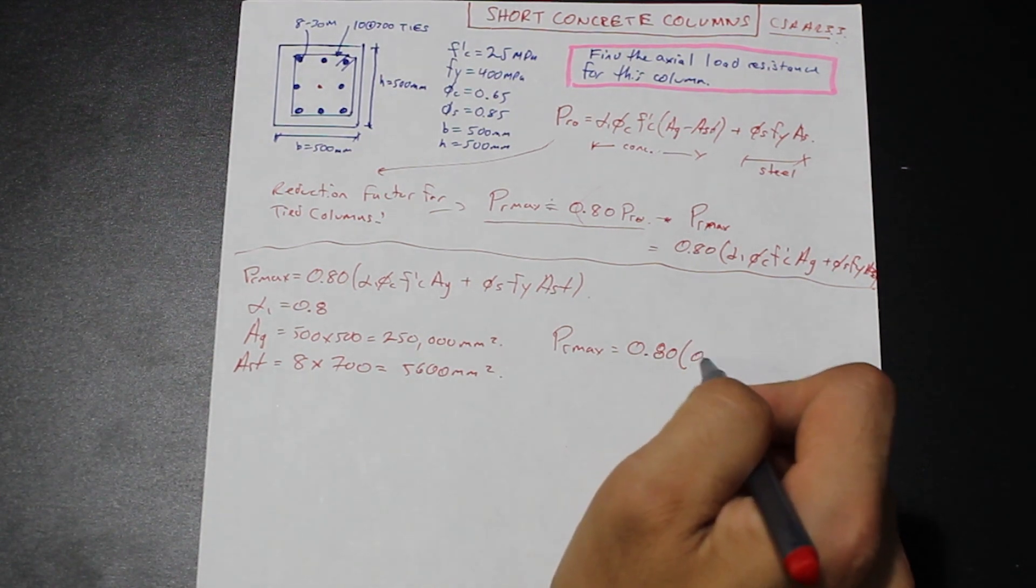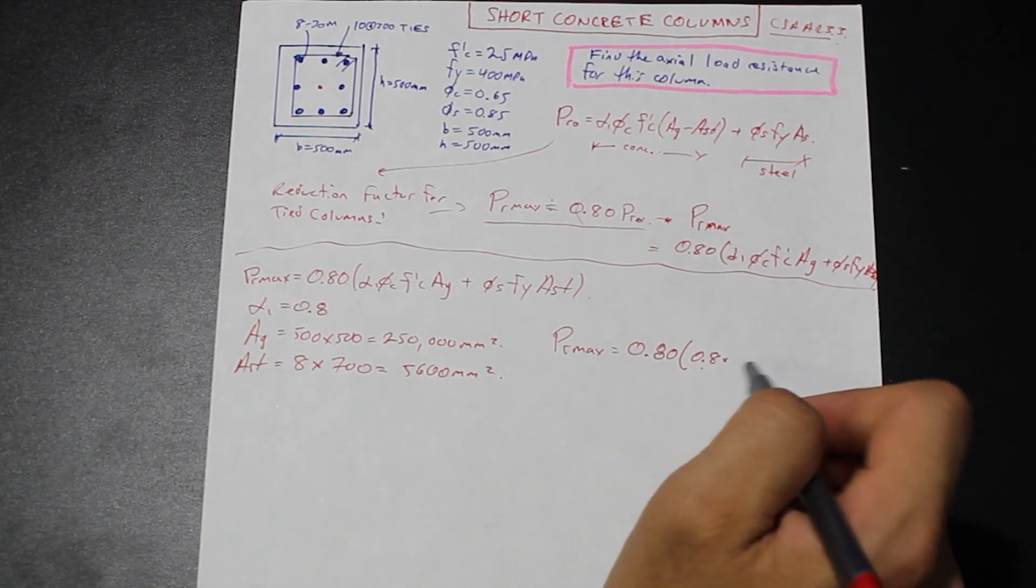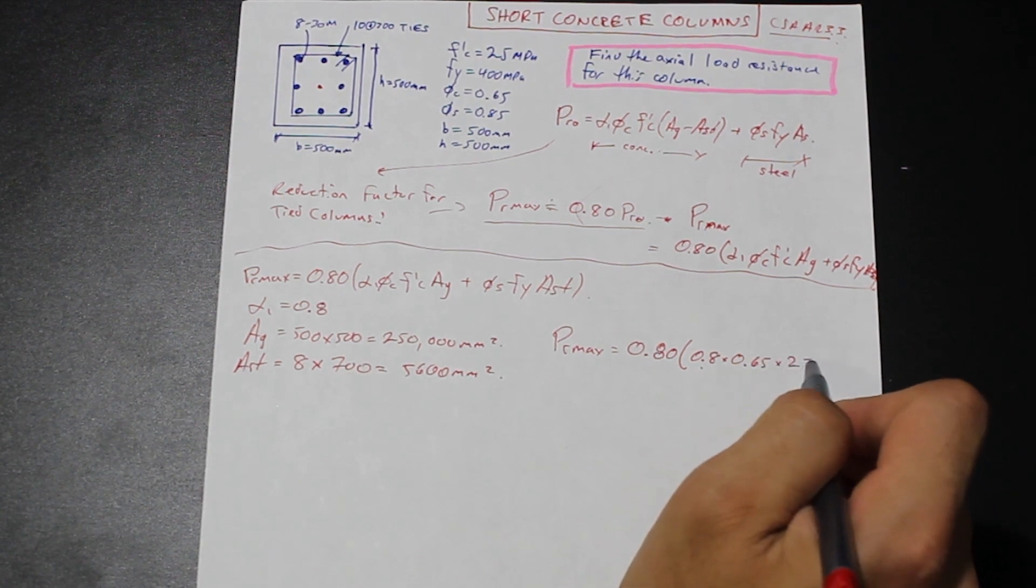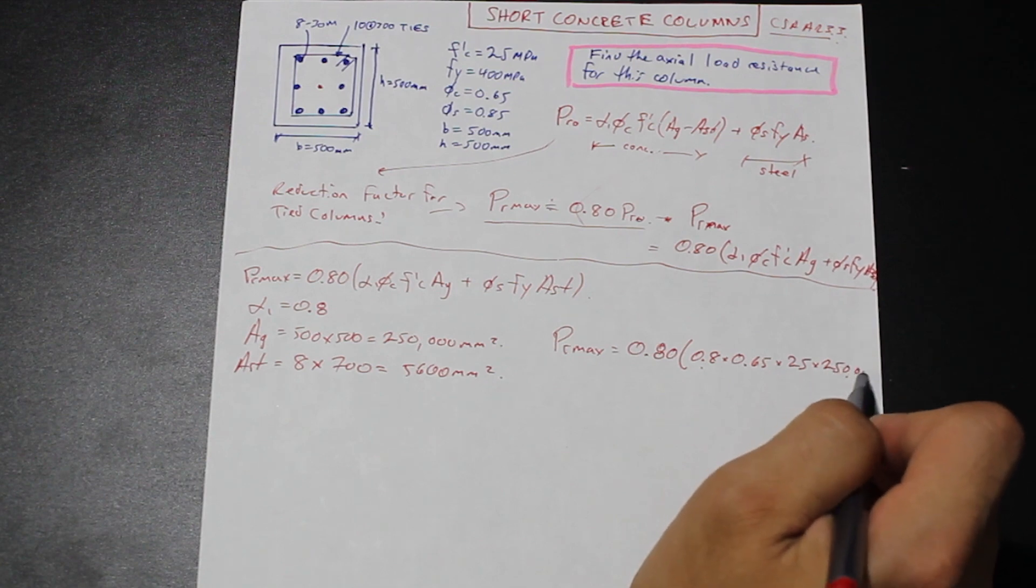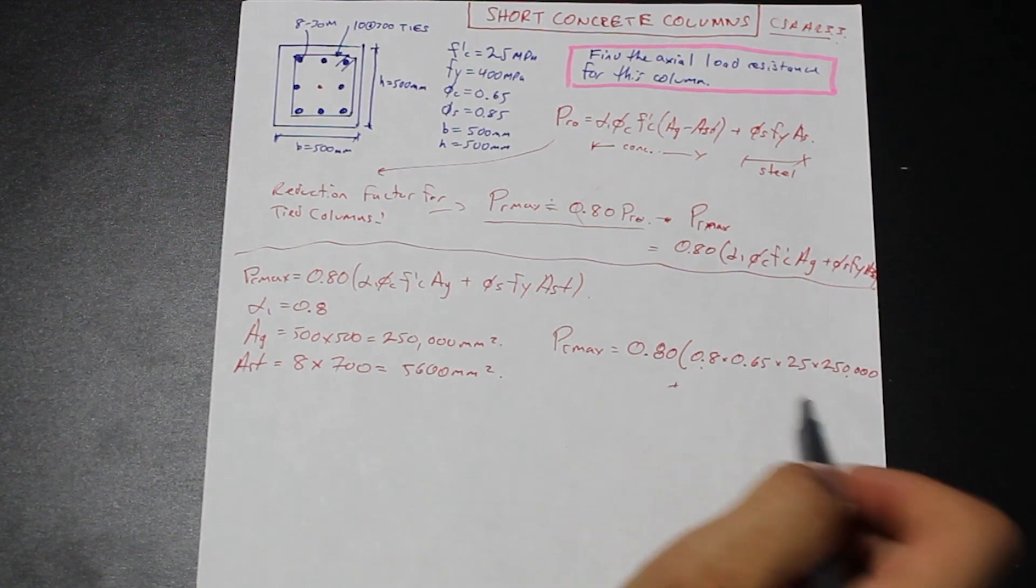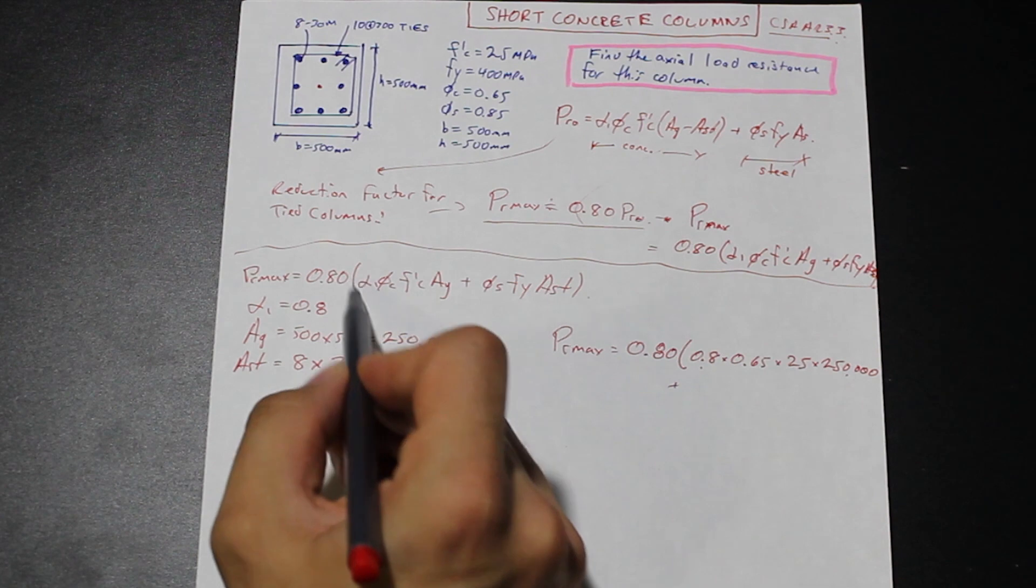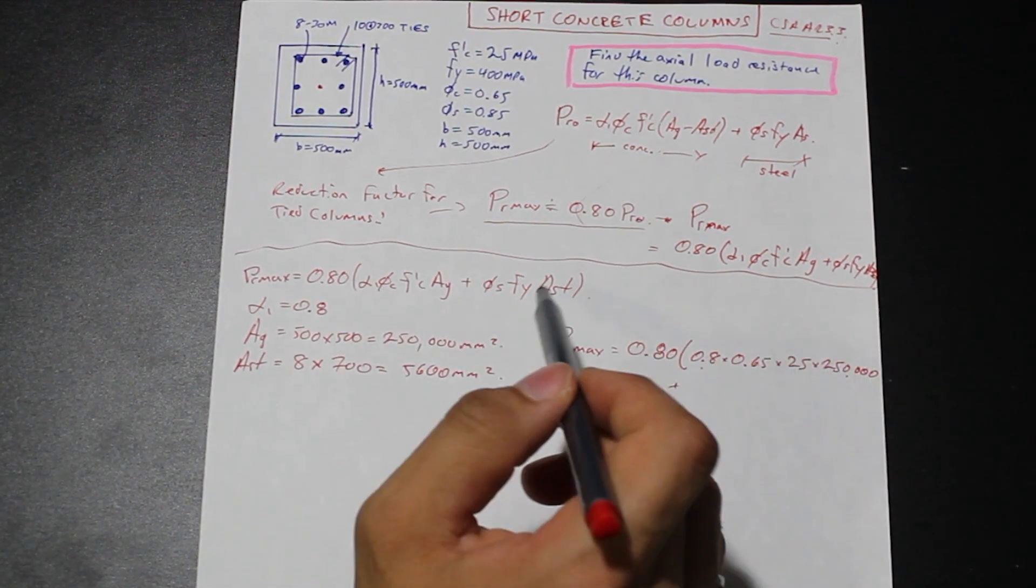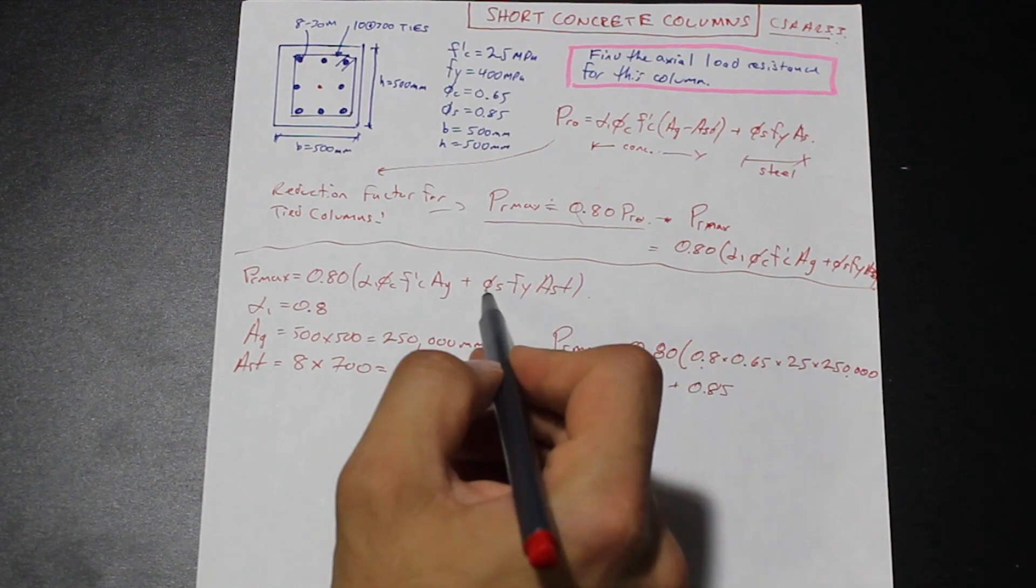Alpha1 is 0.8 times phi_c times f'_c, which is 25 MPa. Make sure we're using the right units too. And that's times 25,000 plus, let's add, and this is the concrete resistance. So that term that we just put in there is the concrete resistance. Let's put in the steel resistance. So that's going to be 0.85, phi_s. That's given in the question.